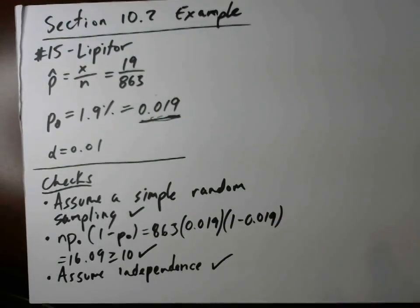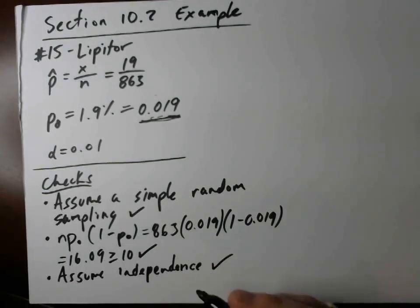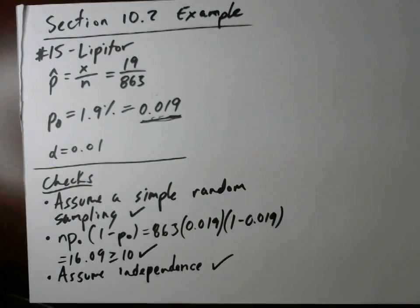But this second check of the sample, the large enough sample size, is usually the most common thing that you'll be dealing with in your checks to make sure that you have a large enough sample size to have a normal distribution. Okay, so we're done with our checks. So we're ready to go into step one.